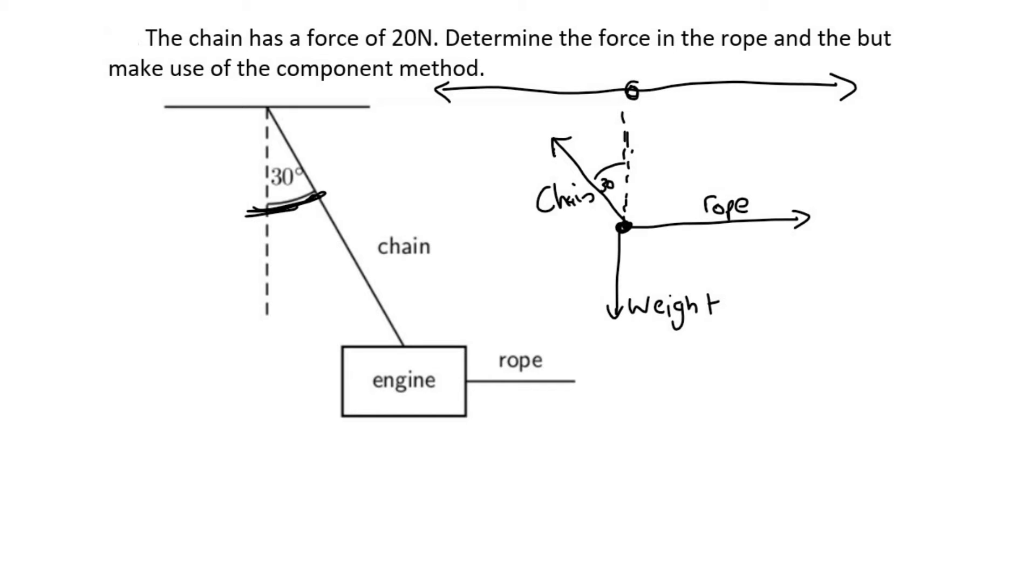So let's look in the left and right direction. We'll call that fx and let's say going to the right is positive. Or we can actually just say that the rope, the force of the rope, because that's going to the right, must be the same as the force of the chain going to the left. Now you see here, we've got the force of the chain at an angle. So if we make a little triangle like that, for example, then we can use trigonometry to help us work out the horizontal component.